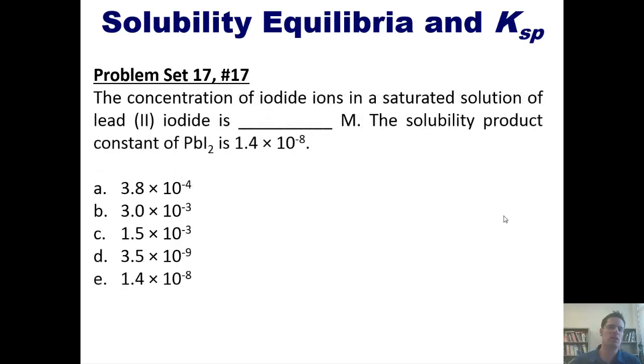And lastly, the concentration of iodide ions in a saturated solution of lead to iodide is blank molar. The solubility product constant of lead iodide is that number. If you like, once again, you can attempt this on your own, and then click the link here to a separate video in which I show you how to do it on the board.